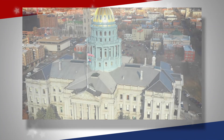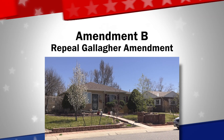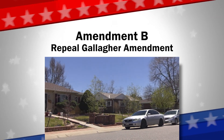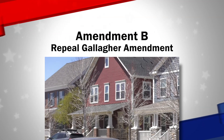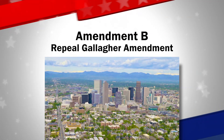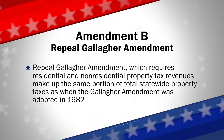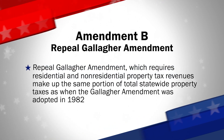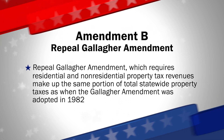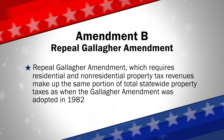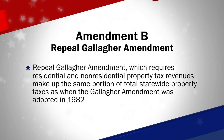First among the issues are the statewide questions. Going in ballot order, the first issue is Amendment B. This proposal was referred by the state legislature and would repeal several constitutional provisions regarding property taxes, commonly referred to as the Gallagher Amendment. It would repeal the Gallagher Amendment, which requires residential and non-residential property tax revenues to make up the same portion of total statewide property taxes as when the Gallagher Amendment was adopted in 1982.